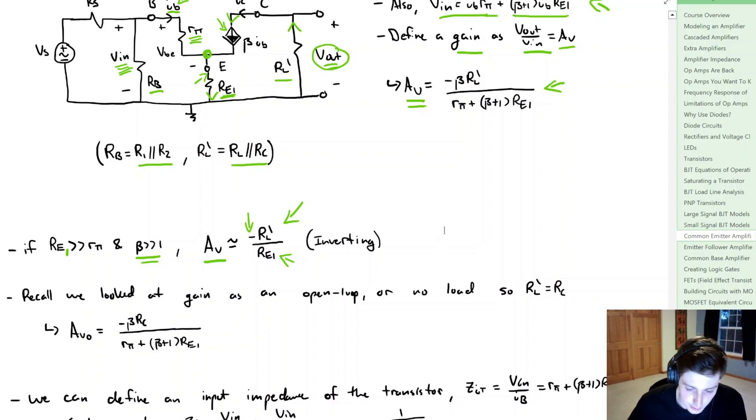And recall that we also looked at something called the open loop gain. Now the open loop gain, that was when we had no load, and RL' is simply equal to RC. From that our open loop gain looks a little bit like our closed loop gain, except notice the RL' switched to RC.